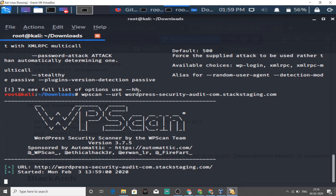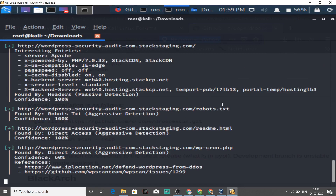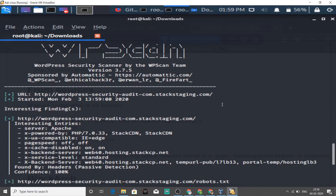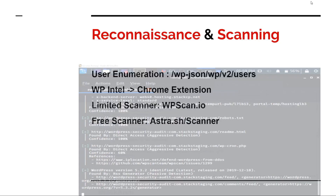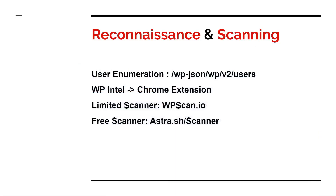I'll let this scan run for a while and meanwhile explain what it's about, then we'll see what it finds. It has actually started to find a few things. The other thing I have for you is a free scanner. With WPScan and wpscan.io you are limited to a few scans, but there's another free scanner available at astra.ss/scanner.